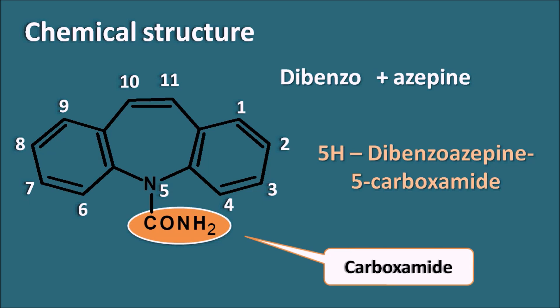The '5H' indicates that the fifth position is saturated, so it is 5H-dibenzo azepine-5-carboxamide. Carbamazepine should not be confused with the benzodiazepines, which have one benzene with azepine — carbamazepine has two benzenes with azepine. So carbamazepine is a dibenzo azepine.